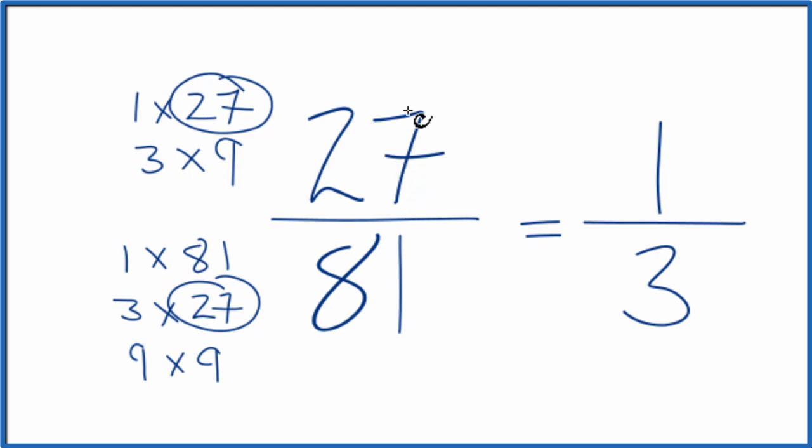So when we simplify 27 over 81, we get one third, and we can't simplify this any further.